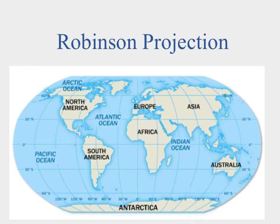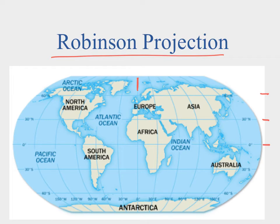One way to correct that distortion is to use a Robinson projection. In a Robinson projection, lines of latitude are still parallel with each other. But the lines of longitude all have a little bow — a bigger bow the further away from the prime meridian you get. So instead of being perfectly perpendicular, the longitude lines bow outward, and that reduces the distortion you'd otherwise see at the poles.